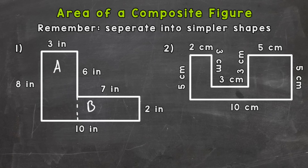I know that finding the area of a rectangle, area equals length times width. So now let's find the area of rectangle A and rectangle B. Area equals length times width. Now I need to plug in length and width.